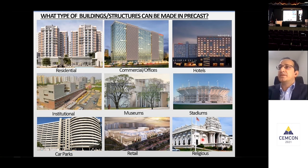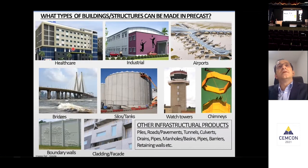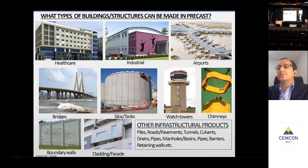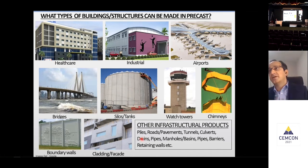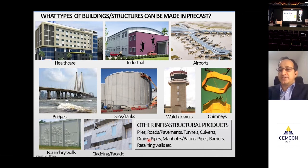Surprisingly, this Hindu temple built in precast is in Omaha, US, using precast technology. Healthcare buildings, industrial airports, bridges, silos, watchtowers, chimneys, boundary walls, claddings — a lot of structures. Even other infrastructure projects such as roads, pavements, tunnels, culverts, trains, pipes. Almost everything can be done using precast construction methods.